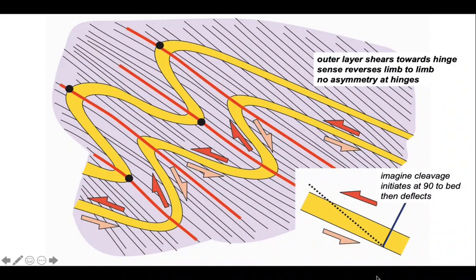The sense of asymmetry is termed vergence. Vergence is defined as the sense of apparent shear of the top of the bed as currently found with respect to the base. In our inset diagram, the sense of vergence is to the left. The top of the bed is sheared leftwards with respect to the right.